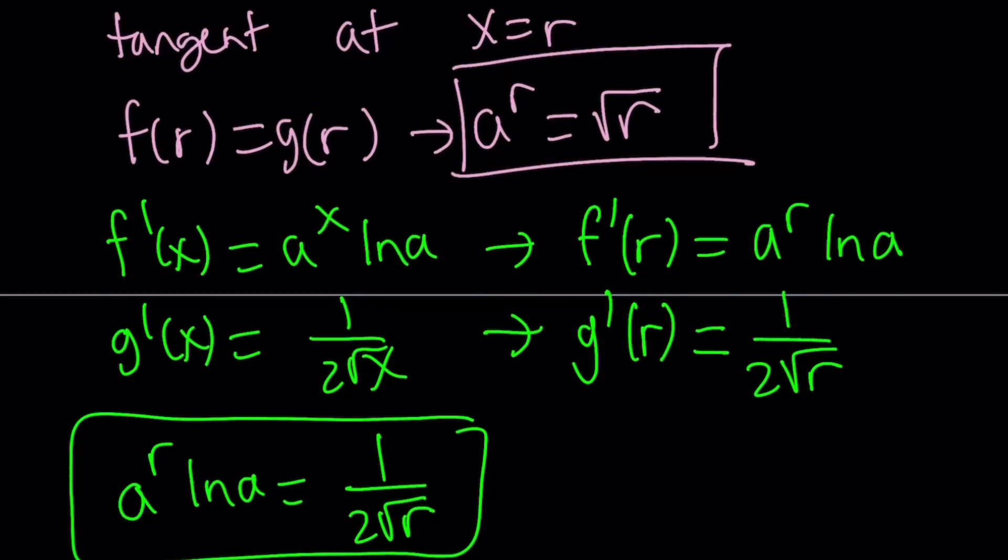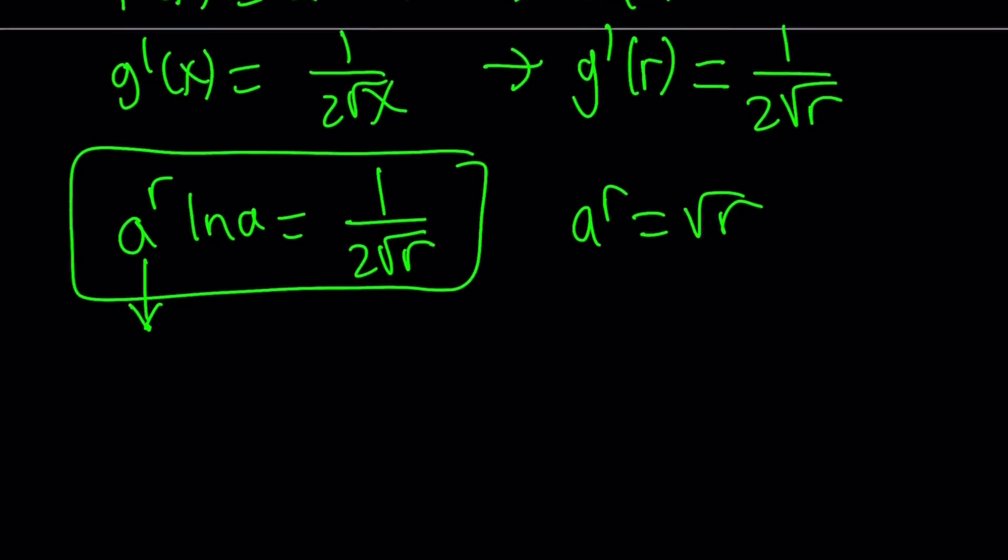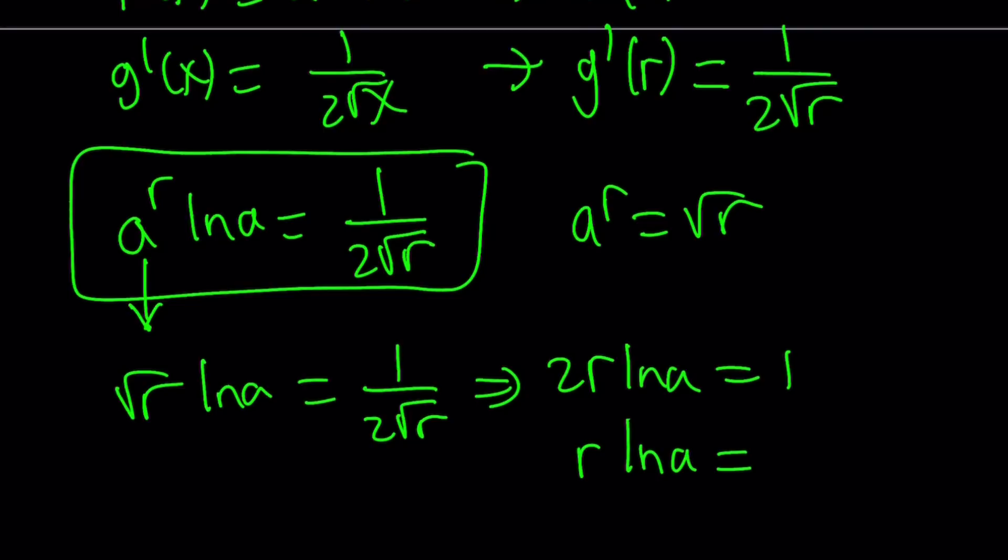So I can go ahead and replace this a to the r with square root of r. Let's do it. Square root of r ln a equals 1 over 2 times the square root of r. And then cross-multiply, you get 2r ln a equals 1 and r ln a equals 1 half.